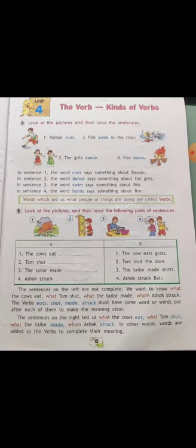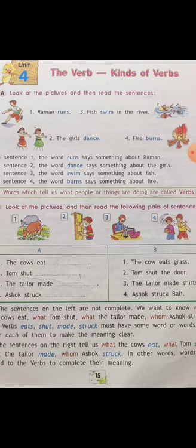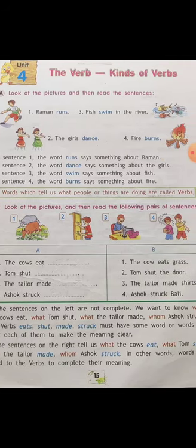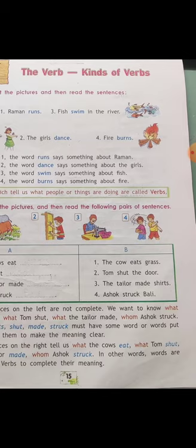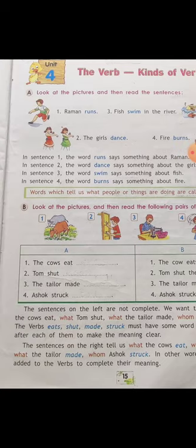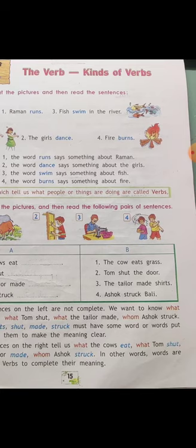'Fire burns' — burns is our verb. In sentence one, the word 'runs' says something about Raman. In sentence two, the word 'swim' says something about fish. The word 'dance' tells us about the girls, and 'burns' says something about fire. Words which tell us what people or things are doing are called verbs.